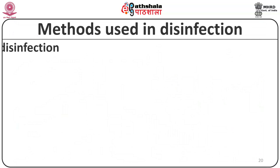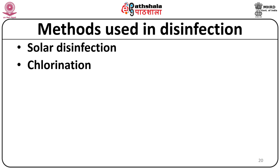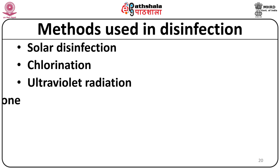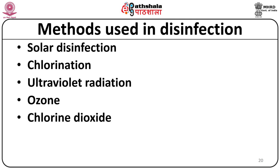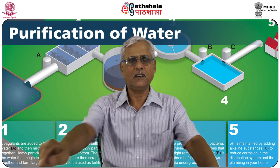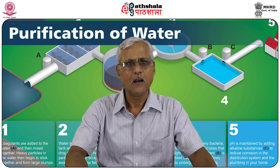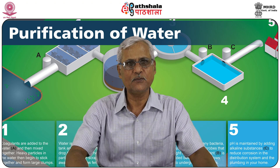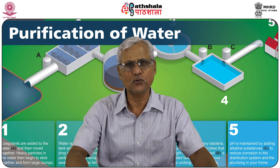Methods used in disinfection include: solar disinfection, chlorination, ultraviolet radiation, ozone disinfection, chlorine dioxide, and membrane filtration. Some of these processes can be combined. In solar disinfection, the temperature of water is raised for a sufficient period in containers capable of absorbing heat from solar radiation. The WHO considers this technique a valid option, but only as a lesser and experimental method.